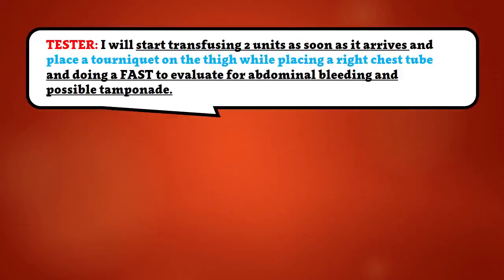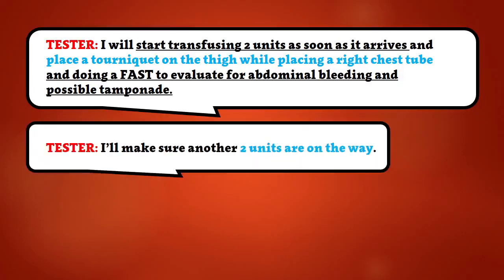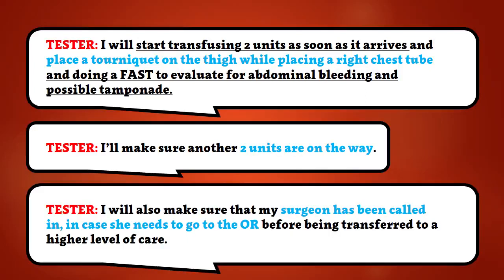I will start transfusing two units as soon as it arrives and place a tourniquet on the thigh while placing a right chest tube and doing a FAST to evaluate for abdominal bleeding and possible tamponade. I'll make sure another two units are on the way, and I will also make sure that my surgeon has been called in, in case she needs to go to the OR before being transferred to a higher level of care.